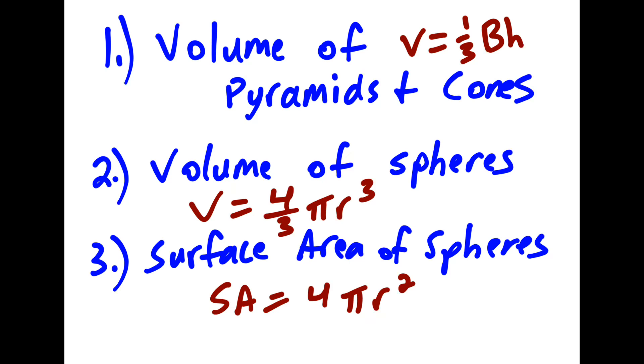We're looking at the volume of pyramids and cones. The formula is the same for both: one-third times the area of the base times the height. And that area of the base part will change.